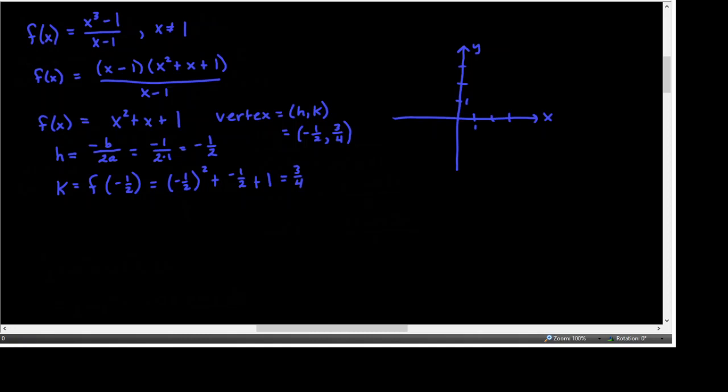Now we know the vertex is on the graph, so let's start graphing. Negative one-half, three-fourths is right there. To find a couple more points, if x is 0, y will be 1, and if x is −1: (−1)² = 1, minus 1 is 0... so that's 1. As long as we don't let x equal 1, those are three points around this parabola.